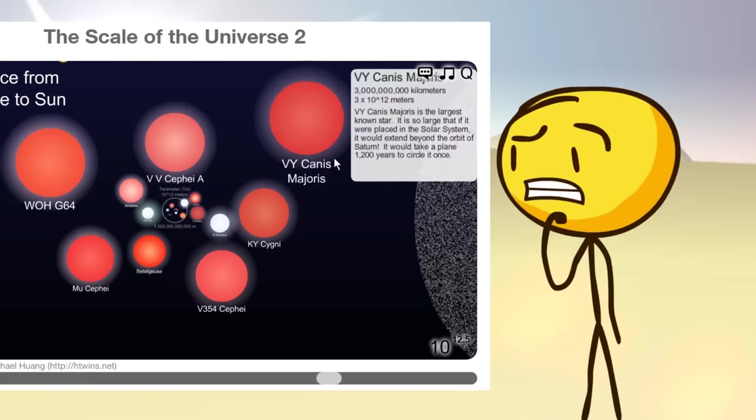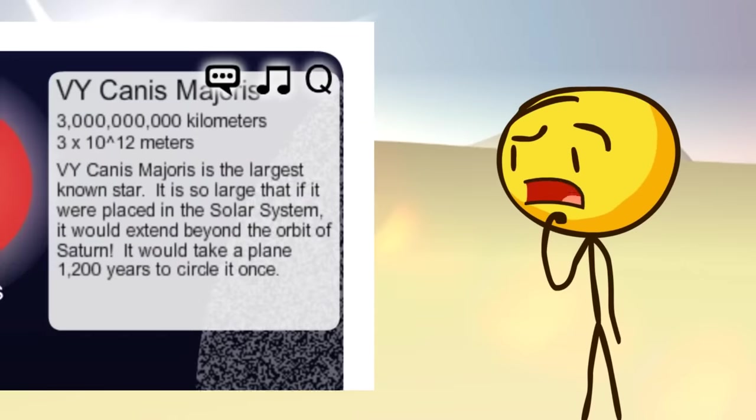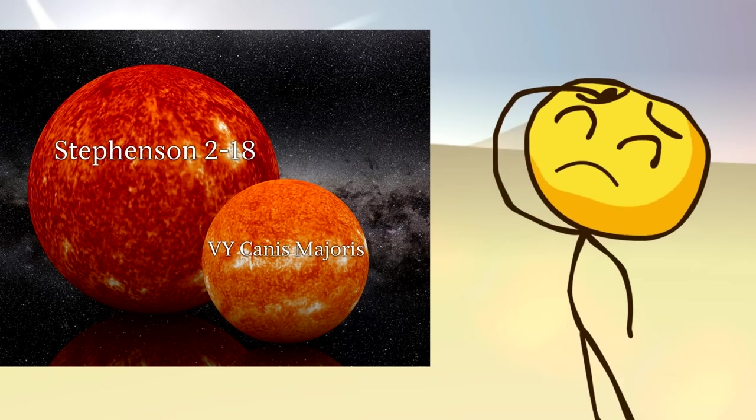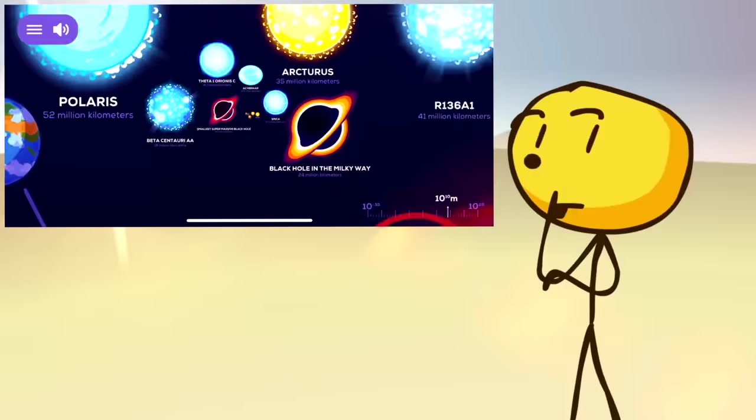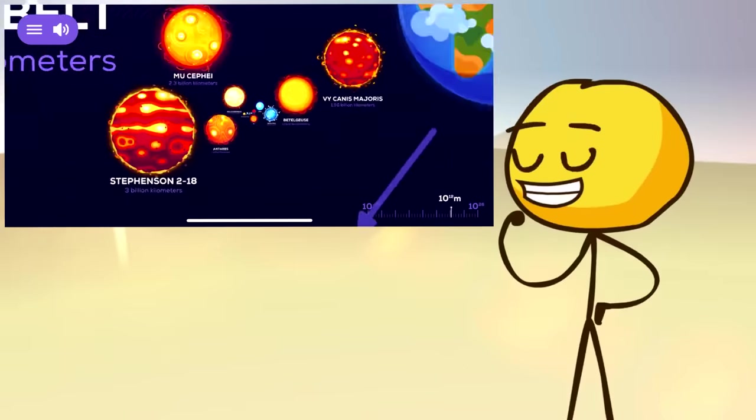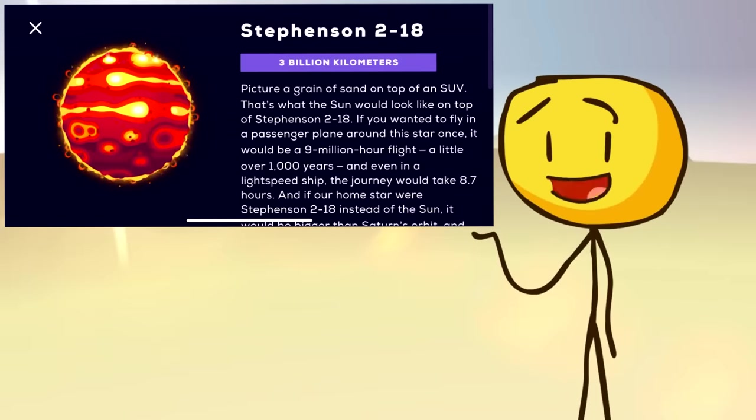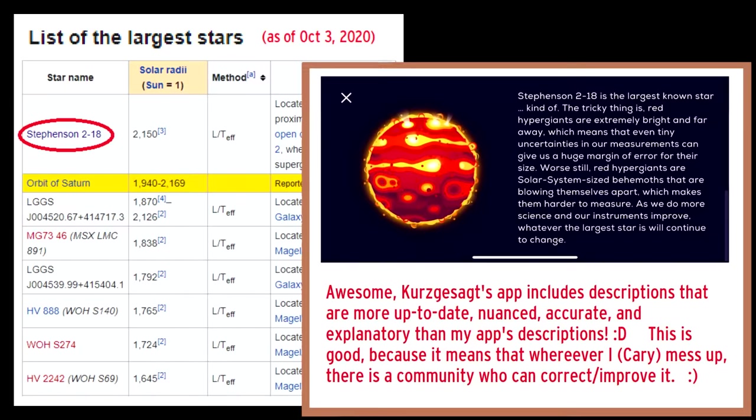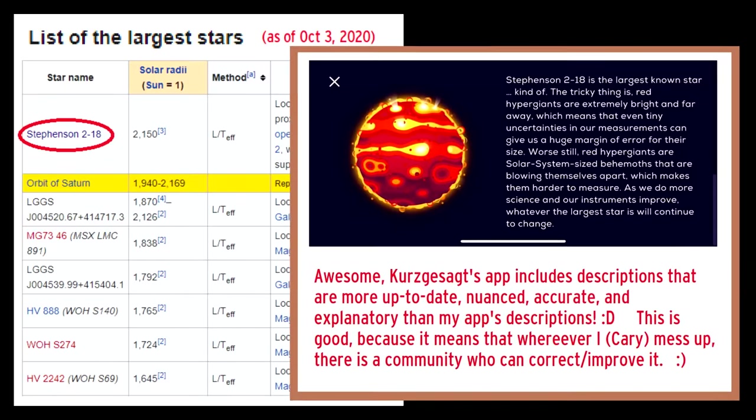For example, it still claims that VY Canis Majoris is the largest star known to humankind, which was true in 2012, but it's not true in 2020. So it's a relief to see that somebody else, that I look up to, has made a more modern version of the app, with information that I trust is more up-to-date with the current knowledge of the scientific community.